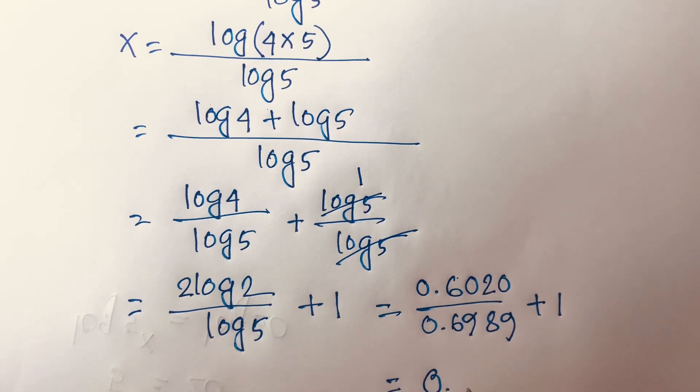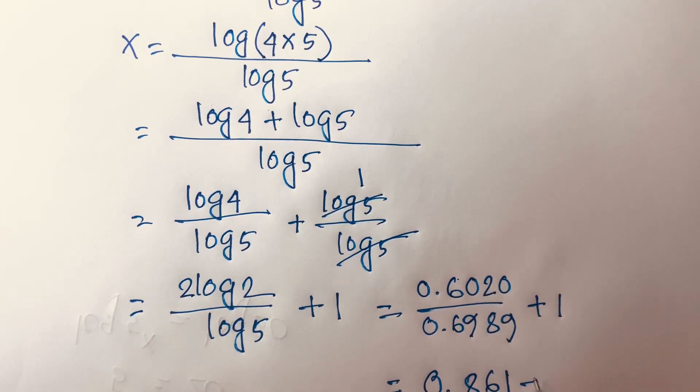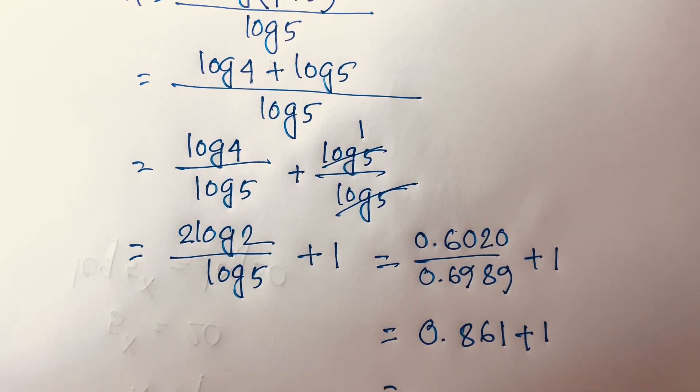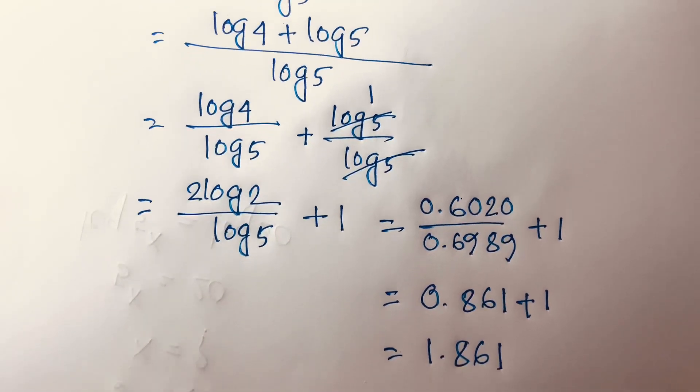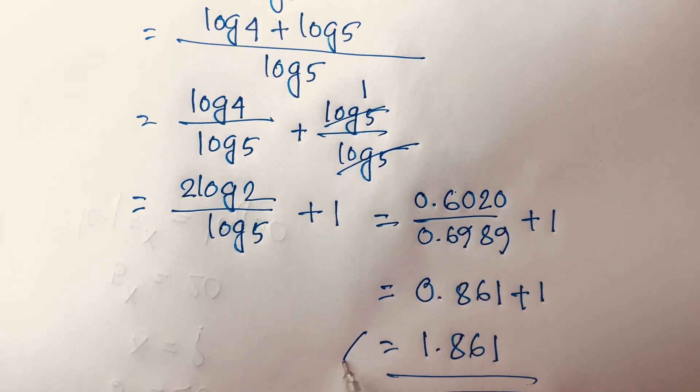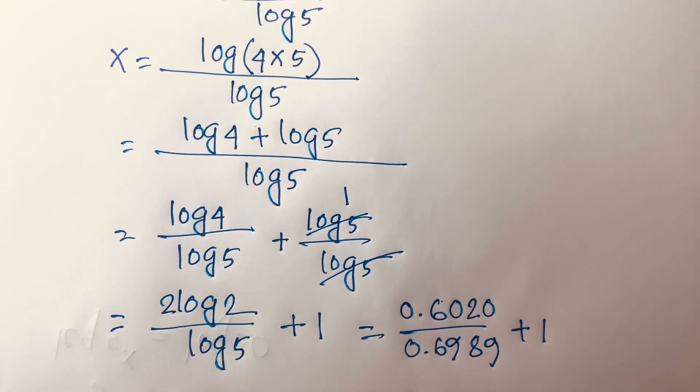Then this divided by this, it will be 0.861 plus 1. Then I can say this plus this, it will be 1.861. This is our final answer, this is the value of x.